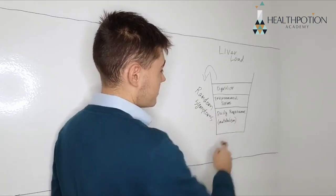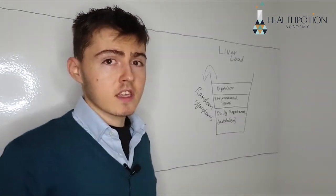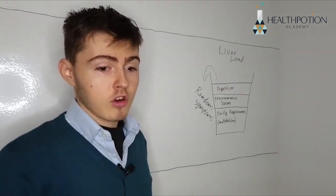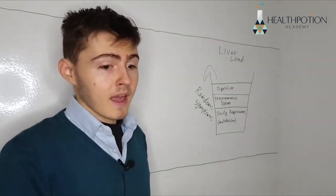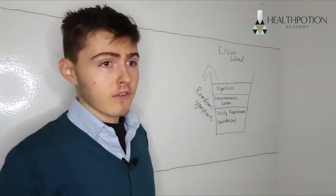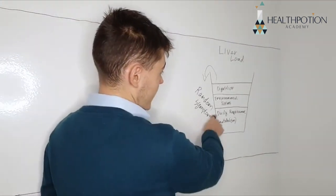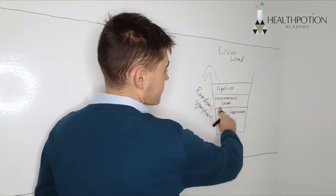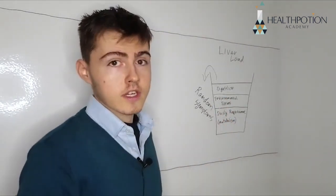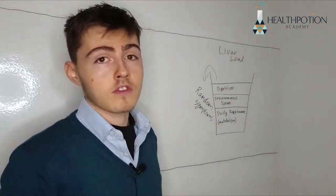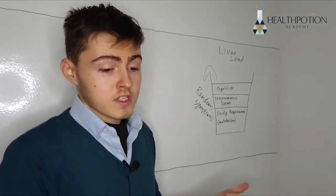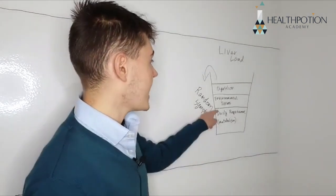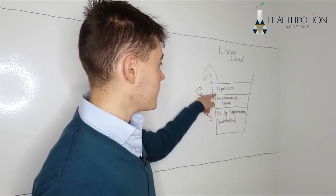At the bottom we've got daily requirements and metabolism — just the basic things your liver does to keep you alive: recycling neurotransmitters, creating cholesterol out of saturated fat, making enzymes. Your liver does so much different stuff and this takes up a lot — nearly half of it already. Then we've got environmental toxins from externally. So if you've got mold in your house, that could be that. If you wash your hands with washing-up liquid, that's an environmental toxin. All of these things add extra load to the liver.